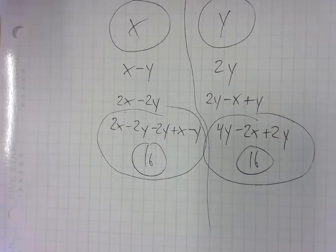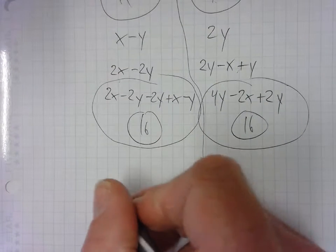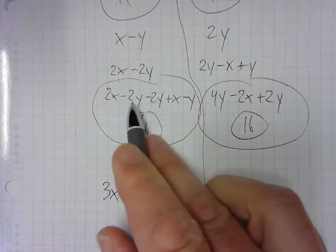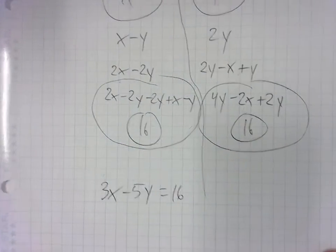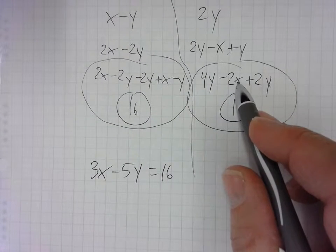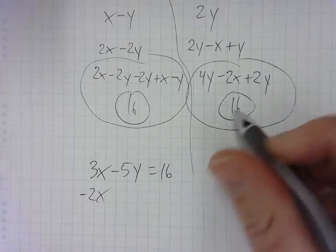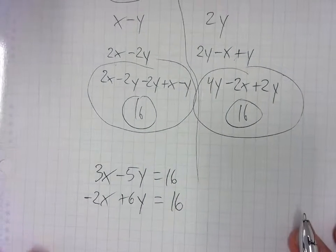So simplifying the algebra, we have 2X and X makes 3X. And the Y is minus 2 minus 2 minus 1 is minus 5Y equals 16. And then over here, we have negative 2X. So negative 2X and then 6Y is equal to 16. So they're each equal to 16. All right.